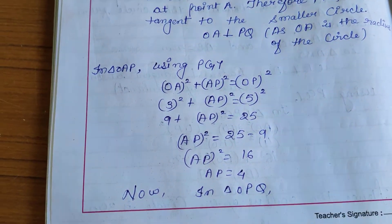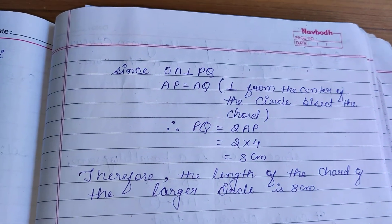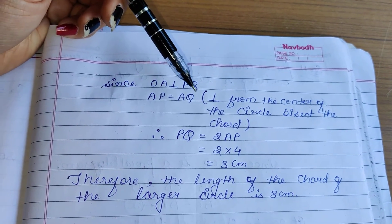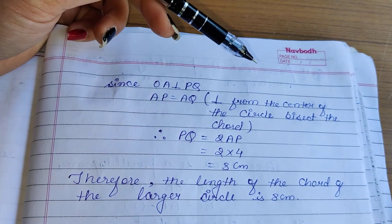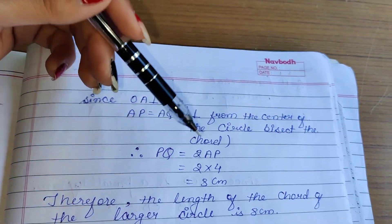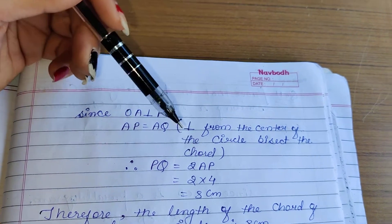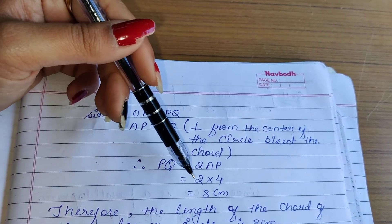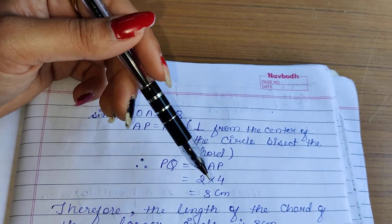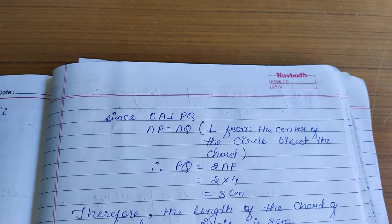In triangle OPQ, since OA is perpendicular to PQ, AP equals AQ because the perpendicular from the center of a circle bisects the chord. PQ is the chord and A is the midpoint. So PQ equals 2 × AP. AP is 4, so PQ equals 2 × 4 equals 8 centimeters. Therefore, the length of the chord of the larger circle is 8 centimeters.